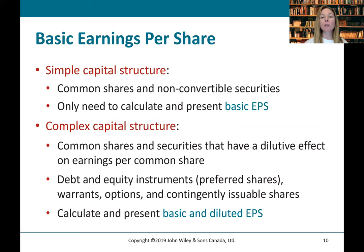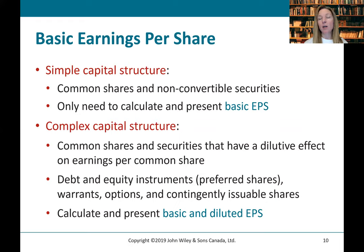Complex structures are where there are common shares and securities that have a dilutive effect on earnings per common share — debt and equity instruments, preferred shares, warrants, options, and contingently issuable shares. If converted, these could result in an increase in common shares and potentially an impact on net income. We need to take into account what would happen if all these securities were exercised — that's what diluted earnings per share is. If there's a complex capital structure, we need to calculate and present both basic and diluted earnings per share.